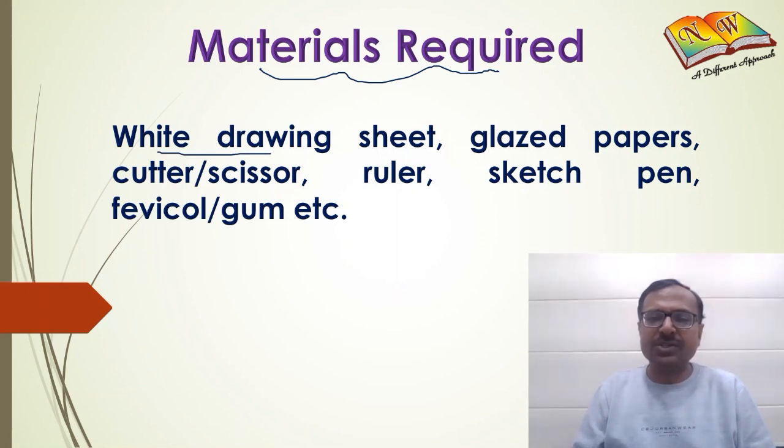We need white drawing sheet, glazed papers of different colors, cutter or scissor for cutting work, the ruler, sketch pins, fevicol and gum for pasting work. Let's see how we can derive this algebraic identity using this activity.